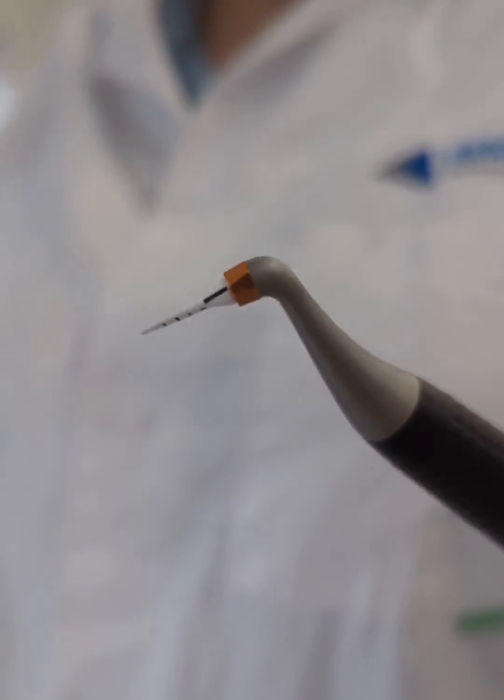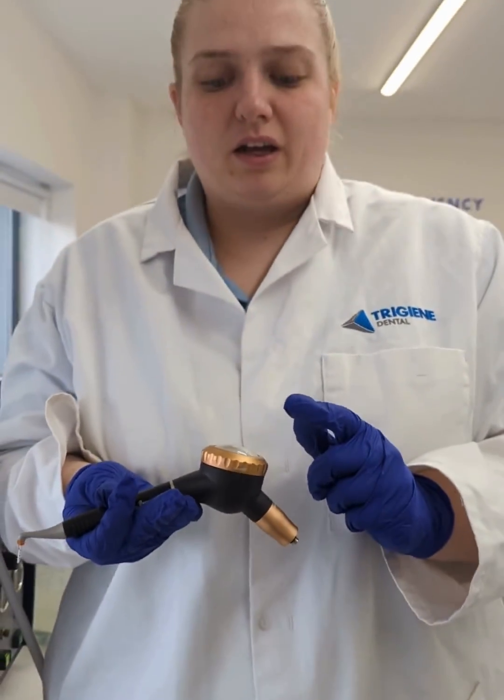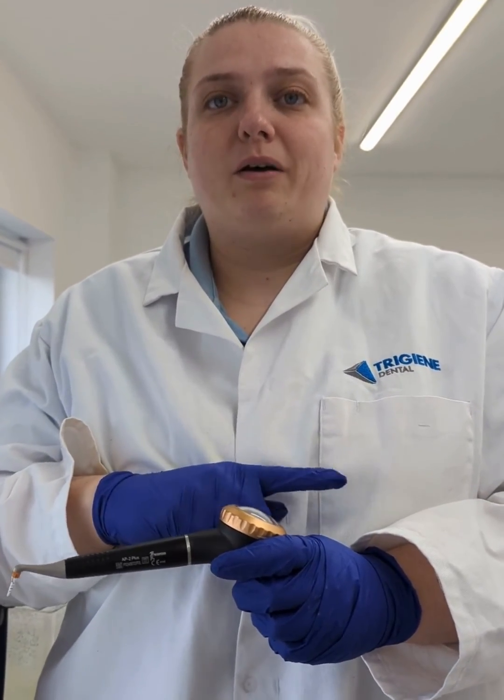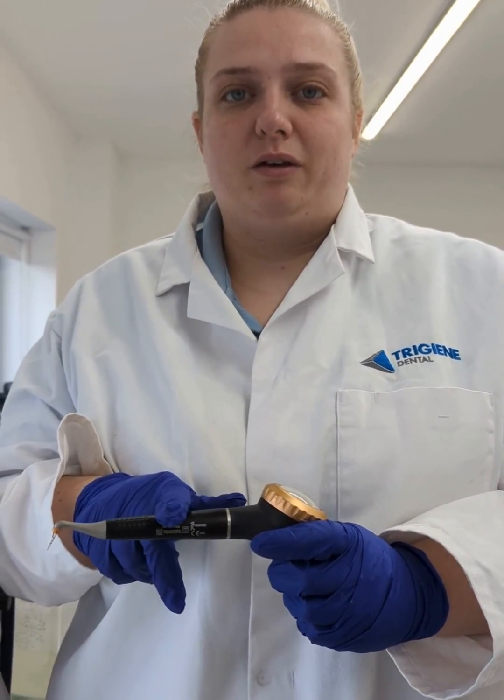So you do have to use sub-gingival perio powder to be able to use the handpiece. So make sure you take out the prophy powder and put the perio powder in before you do this.